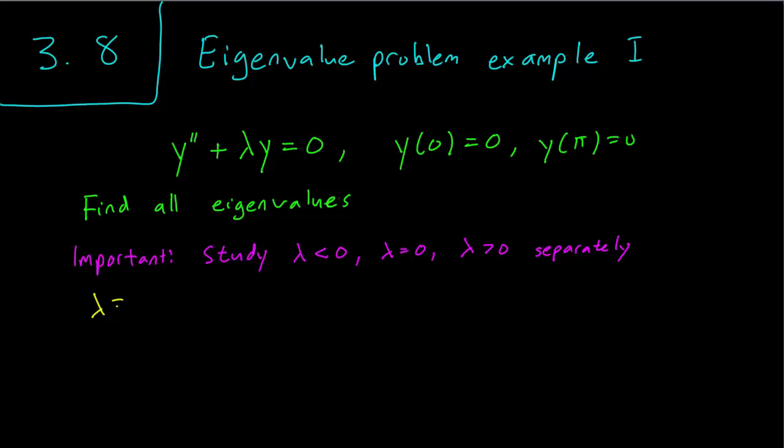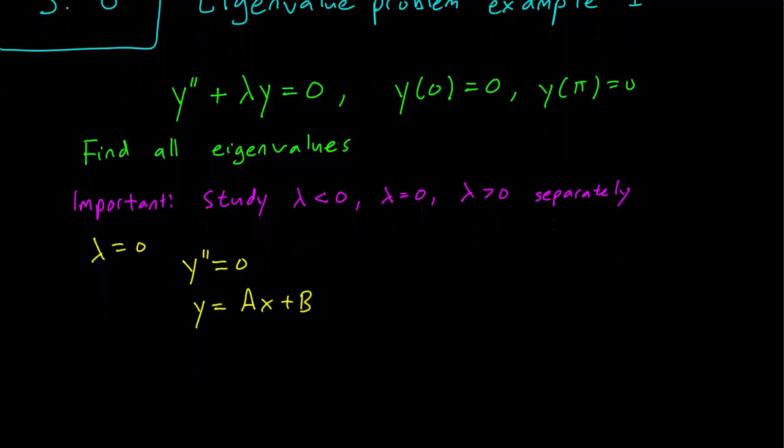Let's first handle the lambda equals zero case and see if zero is an eigenvalue. So we need to see if this equation has infinitely many solutions. We have y double prime equals zero. It's pretty easy to see that the only functions whose second derivative is zero are going to be the functions Ax plus B. We have two constants so we know this is enough.